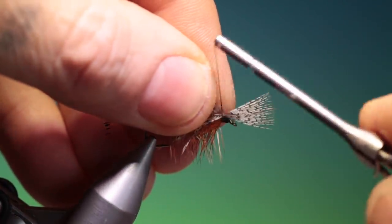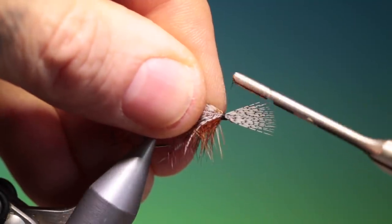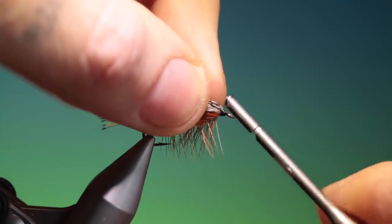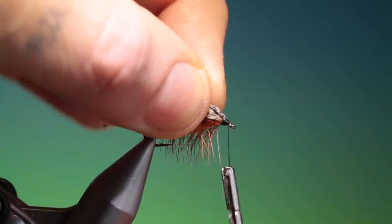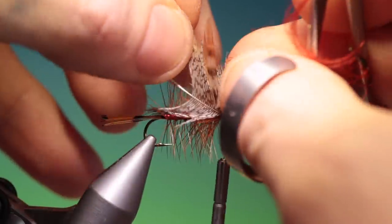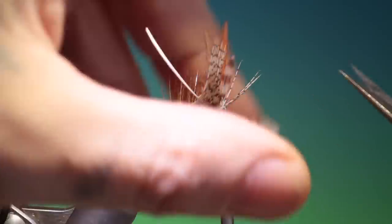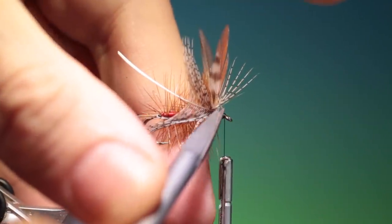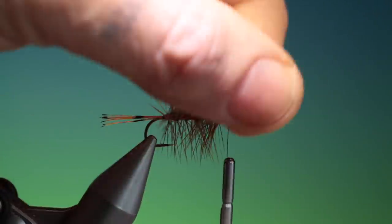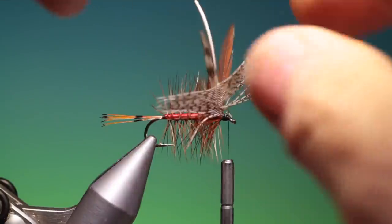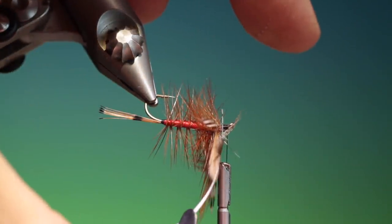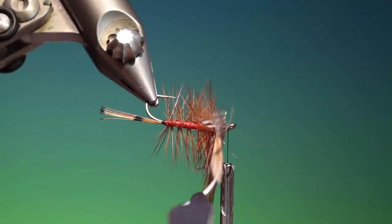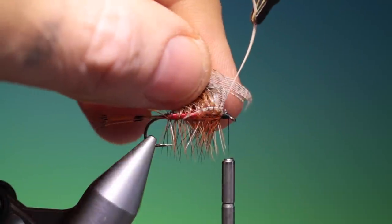We'll just put that in. A couple of turns and I like to fold that back. Start at the hook eye and go back over, just to lock it off. Then we can remove that. And now we'll take our hackle plier and we'll fold the hackles.